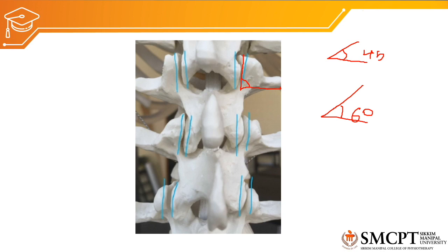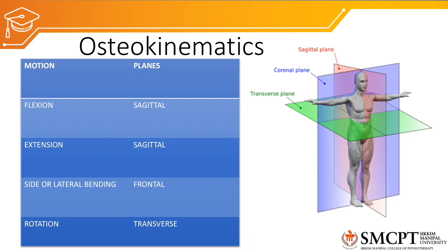Therefore there is less chance of rotation at the lumbar vertebral spine compared to thoracic and cervical vertebral spine. When discussing osteokinematics we have to remember three points: the motion occurring at the joint, the planes and axis at which the motion occurs, and the range of motion. The motions occurring at the lumbar vertebral spine are flexion, extension, side flexion, and rotation.